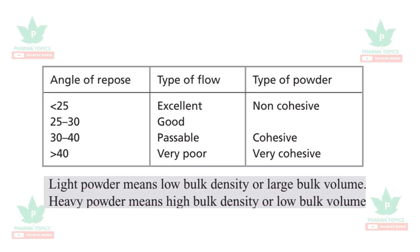A light powder means low bulk density and large bulk volume. A heavy powder means high bulk density or low bulk volume.